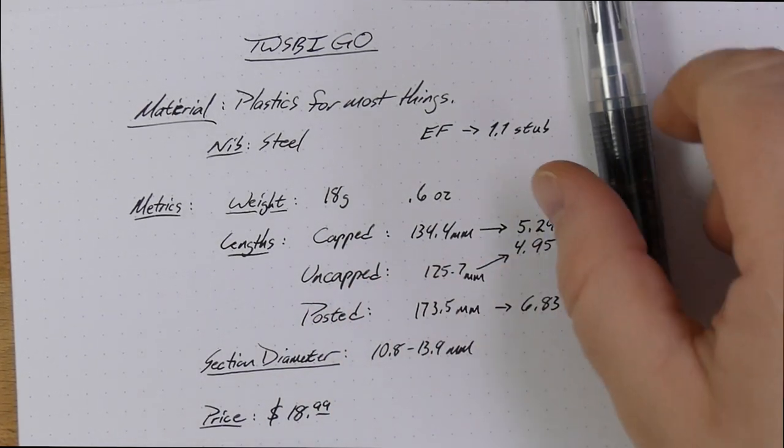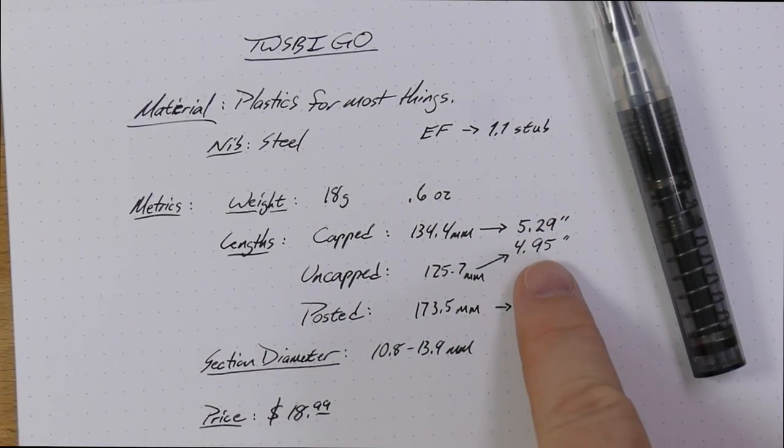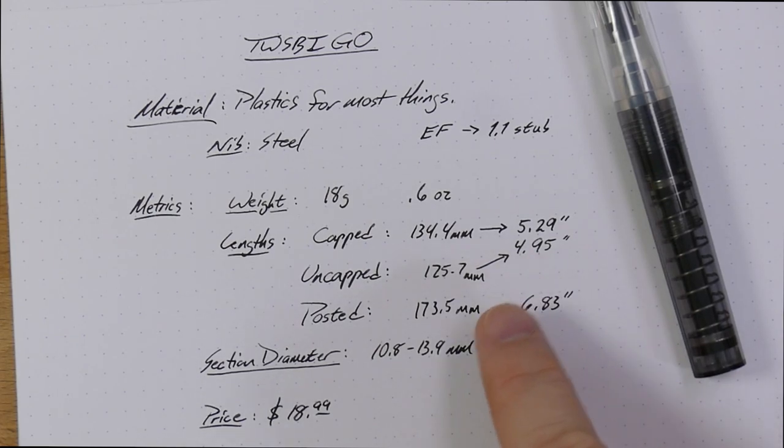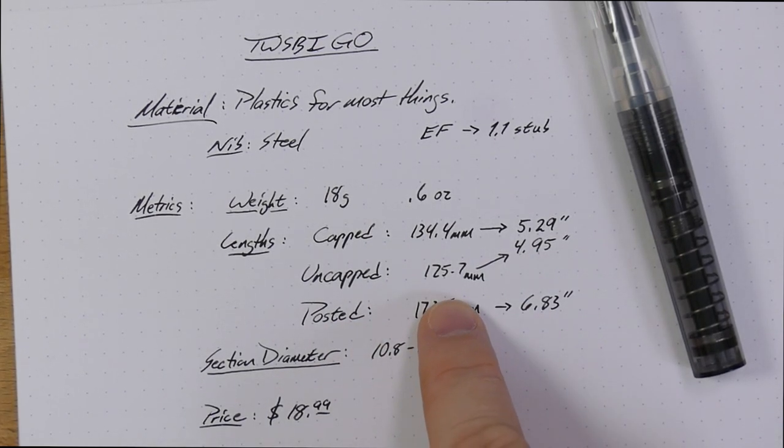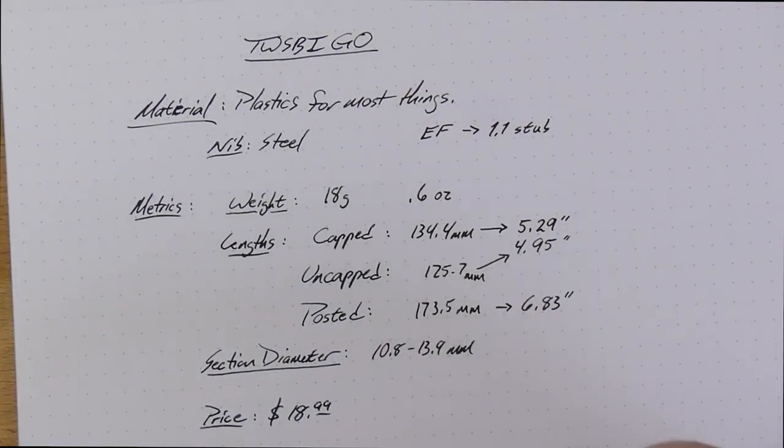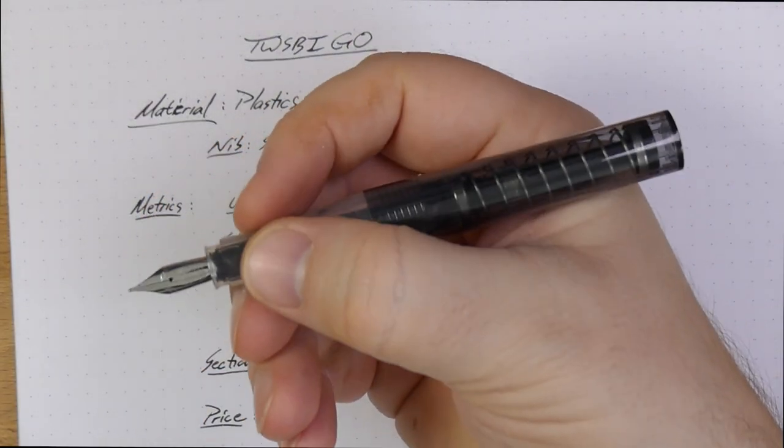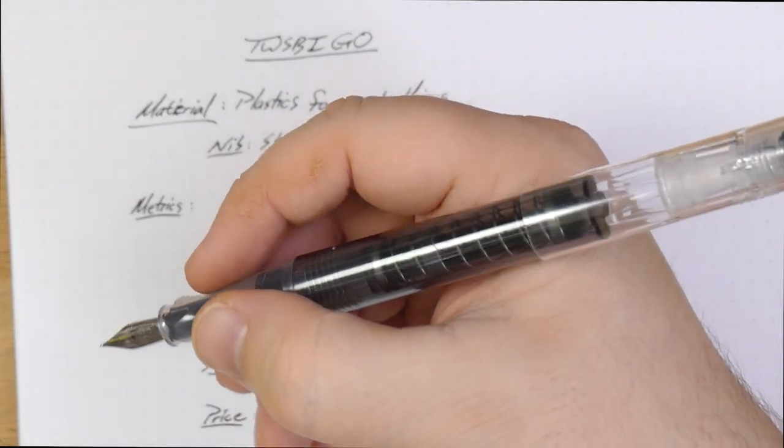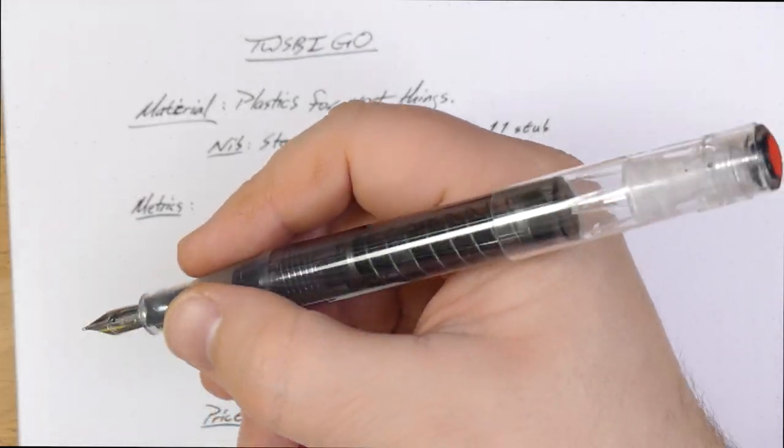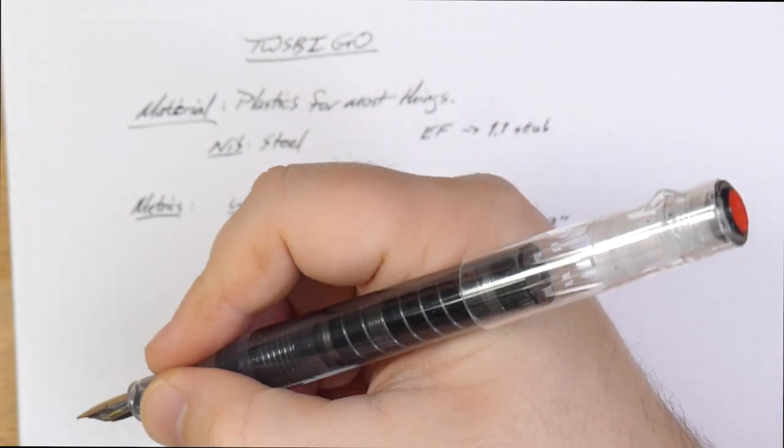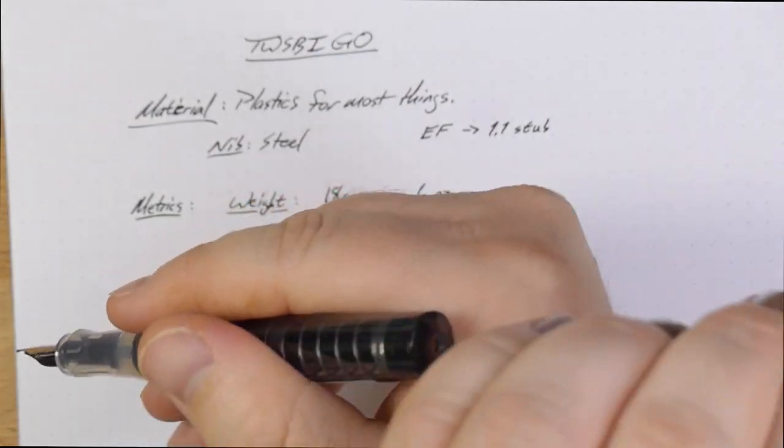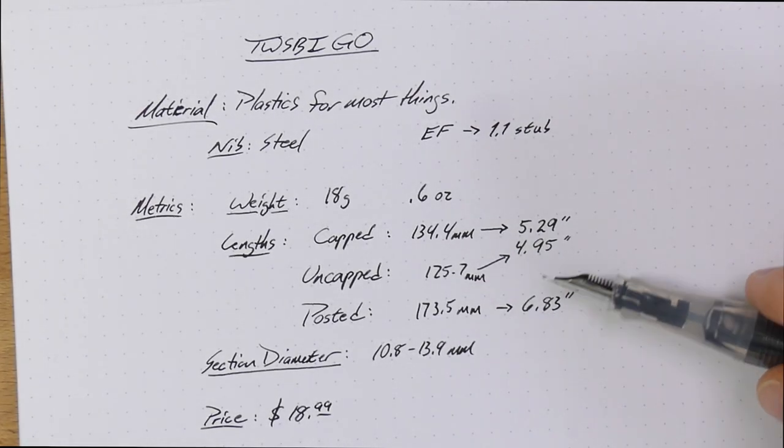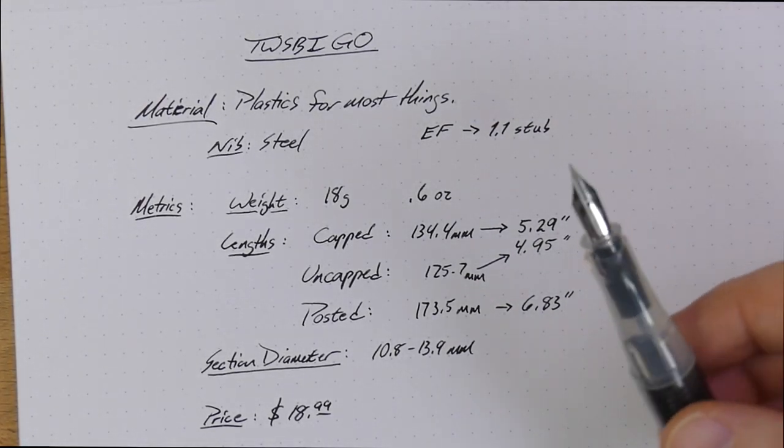Lengths. Capped, 134 millimeters. It's about 5.25 inches, give or take. You've also got uncapped length, 125, which is about 5 inches long. I think it is a perfectly cromulent length. And it's very, very light. You can use this posted with no problem because that cap is so light, it doesn't really add anything. It is a little bit extra long. And so, I don't usually. I'll just hold the cap in my hand or throw it down on the desk, and it's just fine.